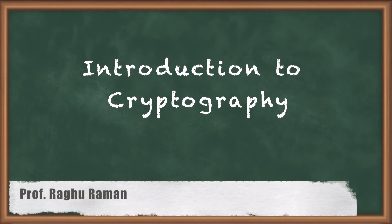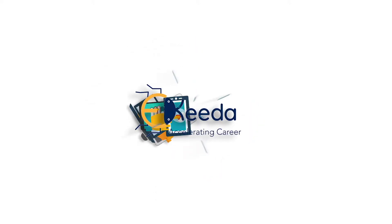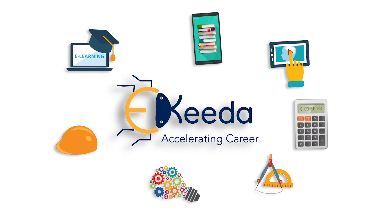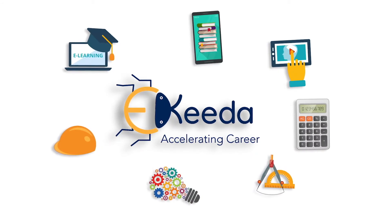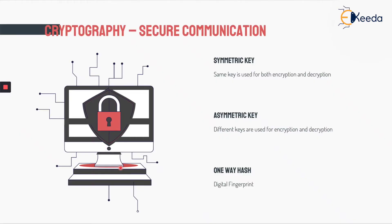One of the most important aspects of crypto economics and blockchain is cryptography. This section of the course will deal completely with cryptography aspects of blockchain. Cryptography is one of the components of blockchain itself. We already saw in detail one of the components called distributed networks, and now we are going to get into cryptography.